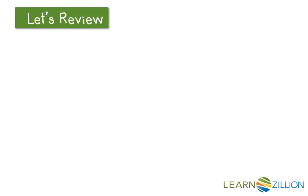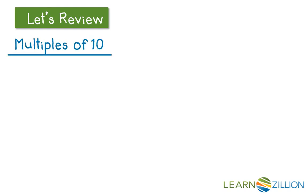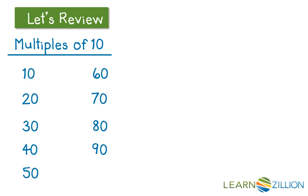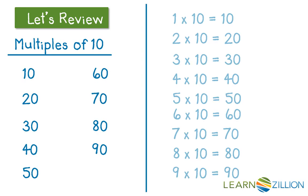Let's review multiples. The multiples of a number are the answers we get when we multiply the number by 1, 2, 3, 4, and so on. Multiples of 10 all end in 0. Any multiple of 10 can be written as a number times 10. For example, 2 times 10 equals 20, 3 times 10 equals 30, and so on.